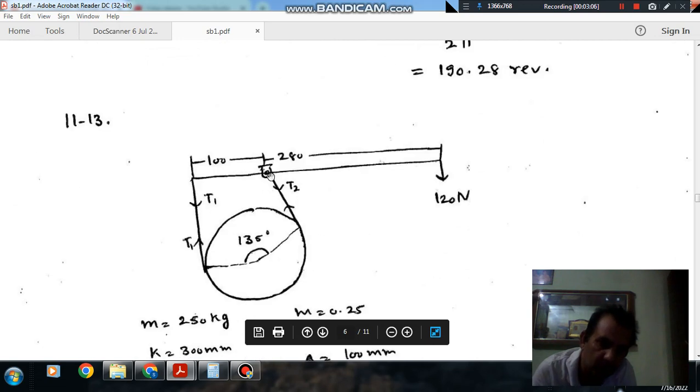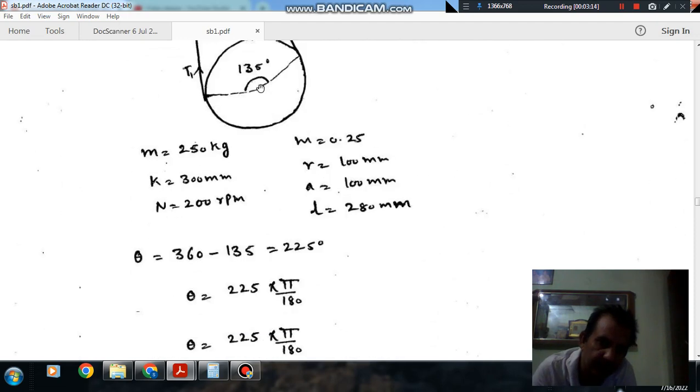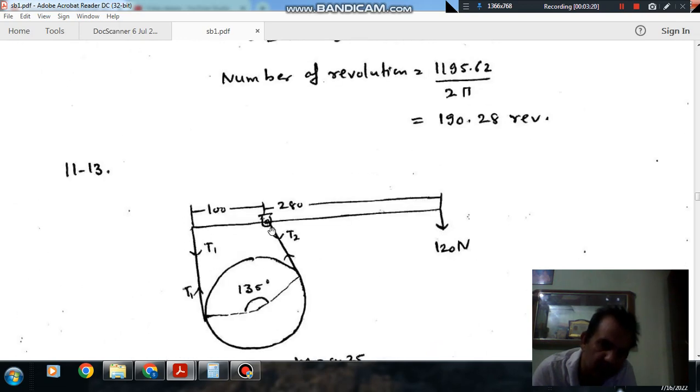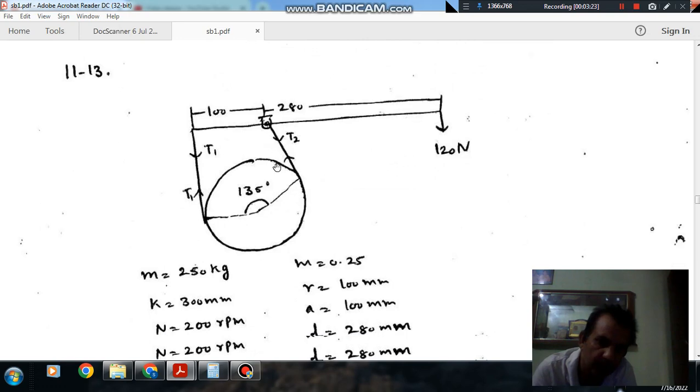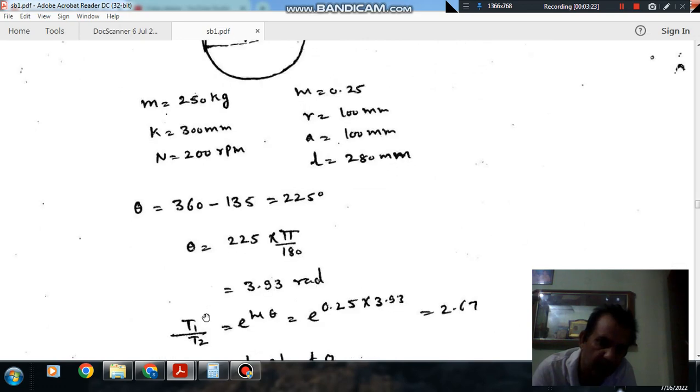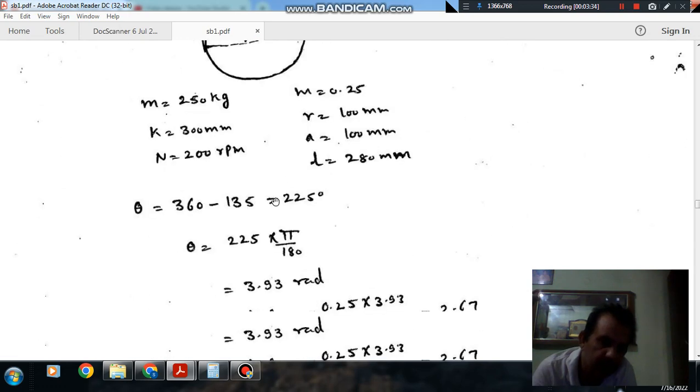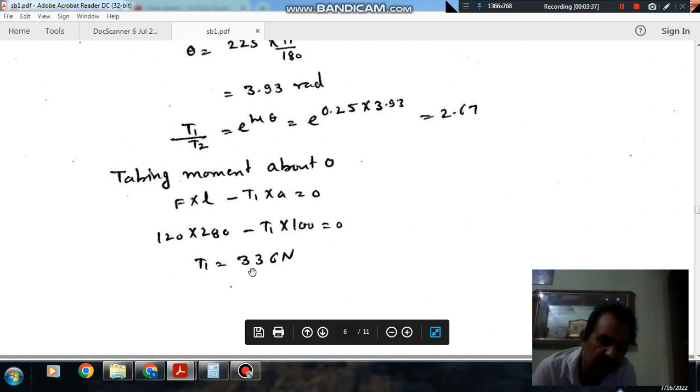Now taking moment about O, or this hinge point, T1 into 100, because T2 is passing through this, so there is no distance for this. So it will be F into L. F is 120 into 280, and it will be equal to T1. From this we can find out T1, so T1 will be 336 N, and from this relationship we can find out T2 also. T2 comes out as 125.8 N.